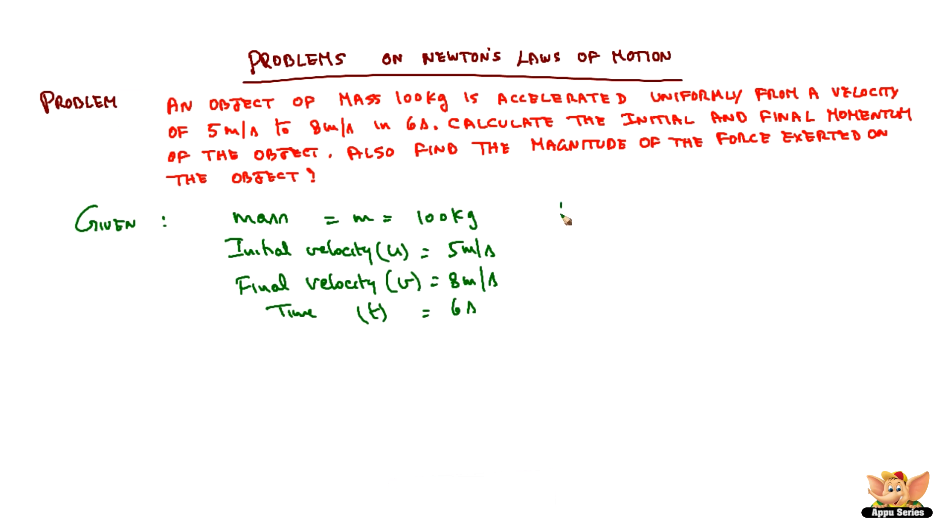Now we need to find the momentum. We know the momentum is defined as p is equal to mass into velocity of the object. Now in this case, let us see the initial momentum p_u is equal to m into u. So mass is the same, 100 into u is 5, so 500 kg meter per second.